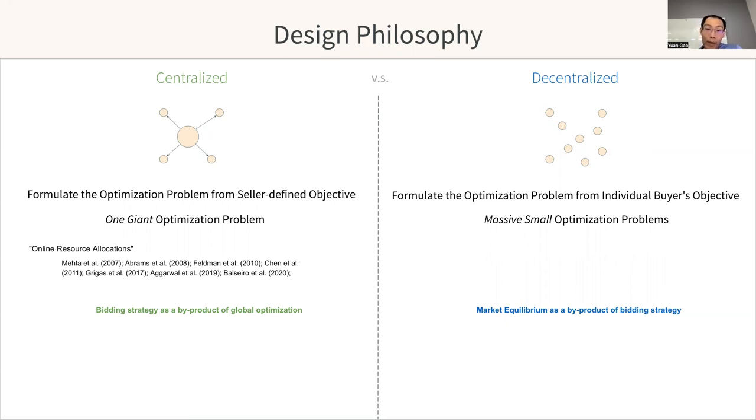The goal is then to optimize the joint utility, usually a weighted combination of the three terms. This results in one giant optimization problem, and there is a rich literature on this under the topic of online resource allocations. Finally, by dualizing, we can arrive at bidding strategies, which is a byproduct of this global optimization.